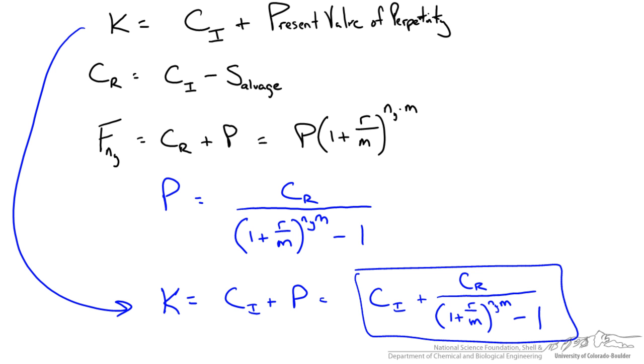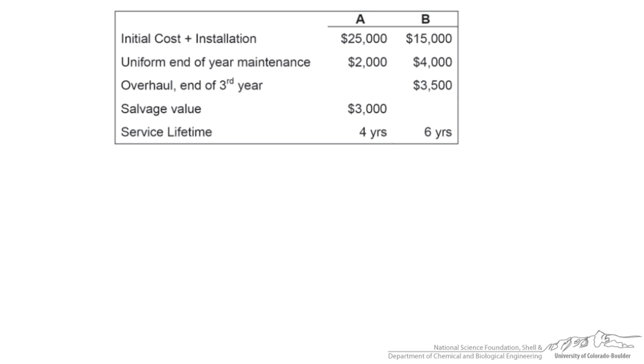Let's go back to our example problem and use these tools to analyze the two pieces of equipment. Here are reactor A and reactor B with our initial costs. We have end of year maintenance and annual costs that we need to account for. What is common with capitalized cost analysis is to discount these annual costs into present worth using an annuity equation. We'll also do that for our overhaul cost to bring it to a present value.